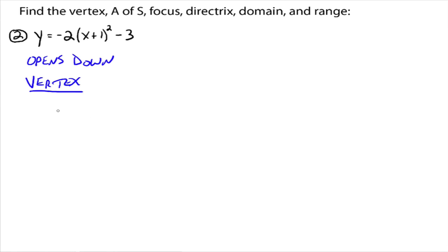So what's the vertex? The h value goes with the x. Notice this time we have x plus 1, which is really, if you think about it, x minus a negative 1. And so therefore your h value is negative 1. And then your k value is negative 3.